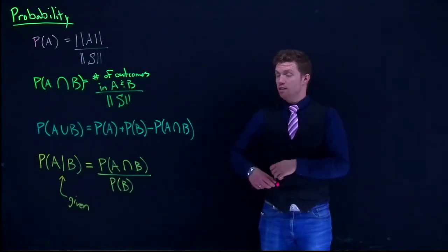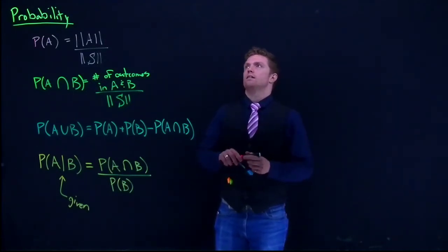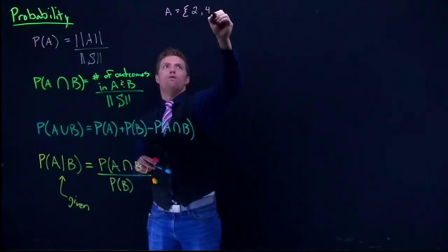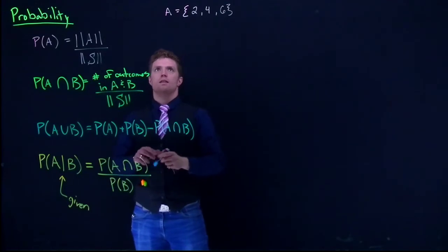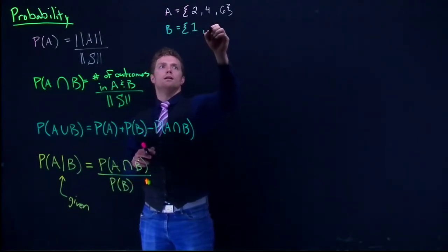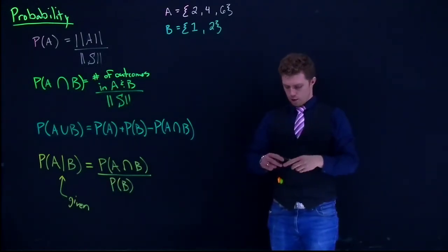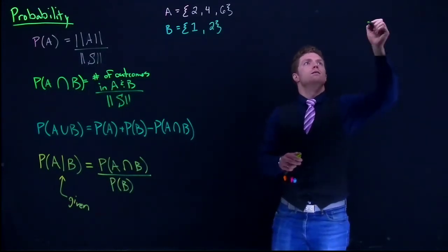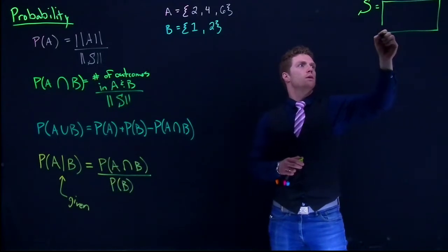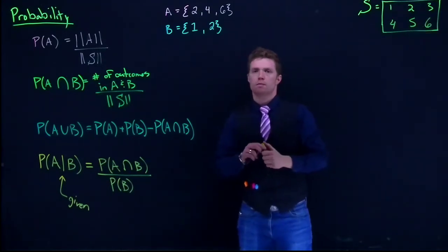Alright, I think the easiest way to explain this is to go back to our dice example. So once again we've got that A equaled the event of 2, 4, 6. And the event B equaled 1 and 2. So we've got A and B and we have our sample space once again. We've got our sample space, which equaled 1, 2, 3, 4, 5, and 6.